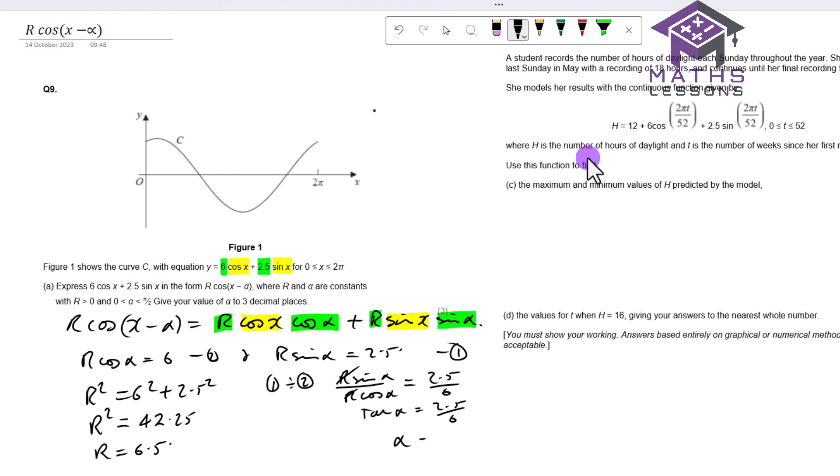It gives you 2.5 over 6. The r's cancelled, so tan alpha equals 2.5 over 6. So therefore when you inverse that you get alpha is about 0.395 when you use your calculator to calculate that in radians. It does say give alpha to three decimal places and it's got to be in radians between 0 and pi.